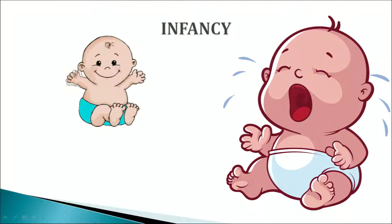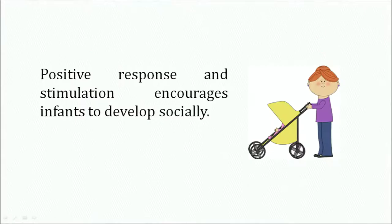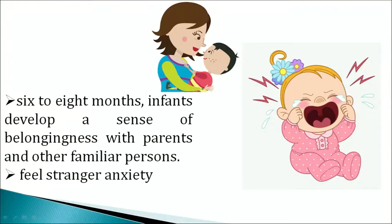Infants interact with people around them by smiling, crying, babbling, and cooing. All these initiate and sustain the infant's interaction with others. When an infant receives positive response and stimulation from others in the environment, he or she is encouraged to develop socially. By the age of 6 to 8 months, infants learn to develop a sense of belongingness and begin to develop attachment with parents and other familiar persons in their world. It is seen that infants feel stranger anxiety, i.e., fear of being separated from their primary caregiver, when they complete the first year of their life.